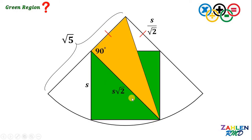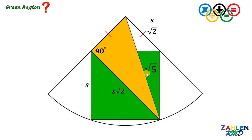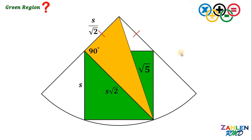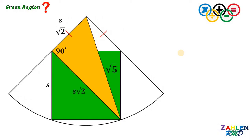We know the measure of one leg of this right triangle, which is equal to S multiplied by the square root of 2. Also, this segment — the hypotenuse — is just the radius of the circle, which is equivalent to square root of 5. These two segments are congruent, so the other leg of this right triangle must be equivalent to S over square root of 2. We can now find the area of the green region, or simply the area of the square.